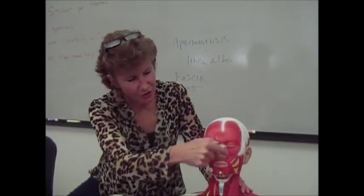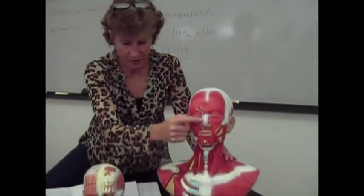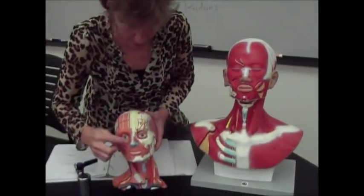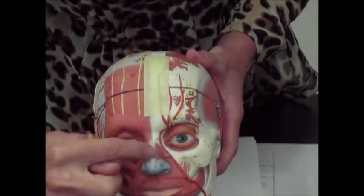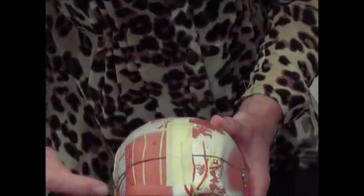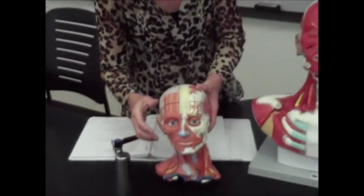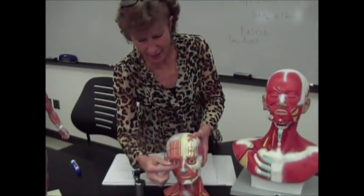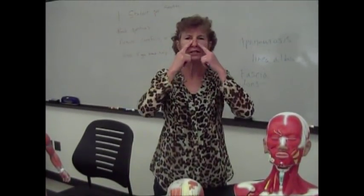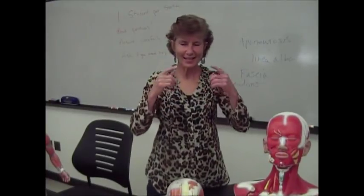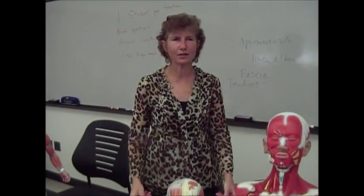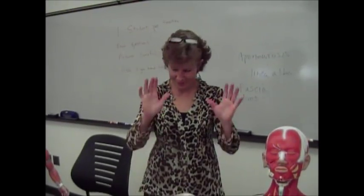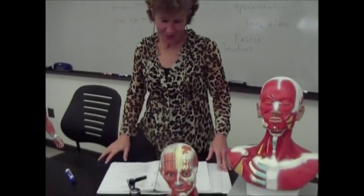Then running across the bridge of your nose, you've got the nasalis muscle — think nasal, nose. It runs across the bridge of your nose. Notice when that contracts, it's not going to make you snarl your nose. It's a muscle that shortens in that direction, so when the nasalis muscle contracts, it's going to make your nostrils flare out.